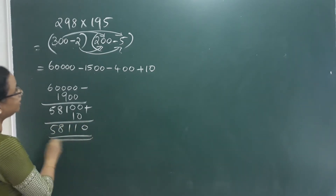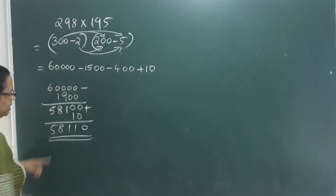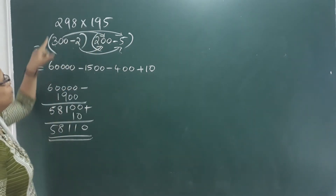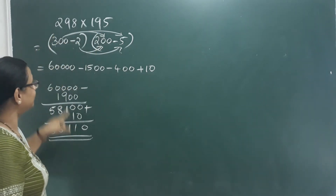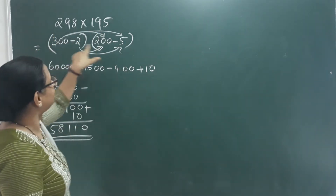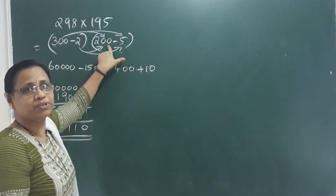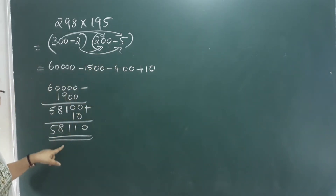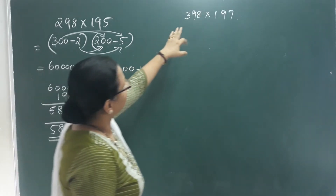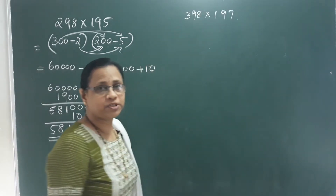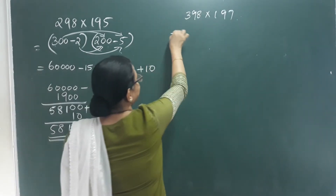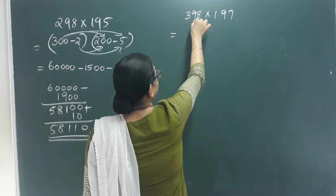If we multiply this number by two numbers, we will get the answer. If we take this in an exam, we can do it. How do we do this?